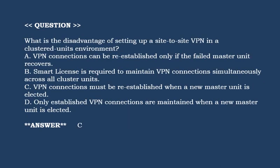Next question: What is the disadvantage of setting up a site-to-site VPN in a clustered unit environment? Option A: VPN connections can be re-established only if the failed master unit recovers. Option B: Smart license is required to maintain VPN connections simultaneously across all cluster units. Option C: VPN connections must be re-established when a new master unit is elected. Option D: Only established VPN connections are maintained when a new master unit is elected. Correct answer is Option C.